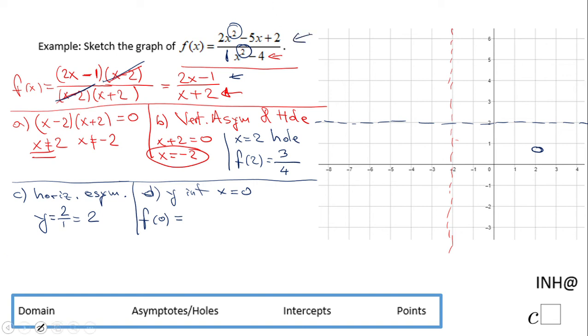We're gonna get positive 2 over negative 4, and that will be negative 1 half. So the y-intercept is 0 and negative 1 half, which is gonna be somewhere here.